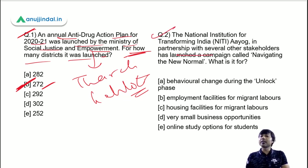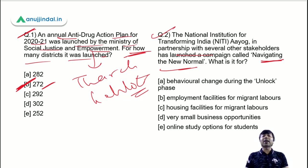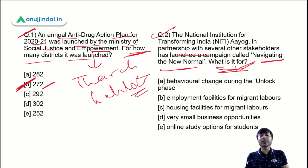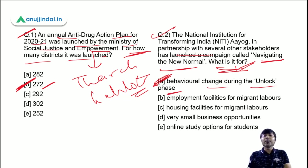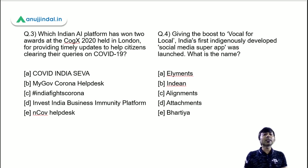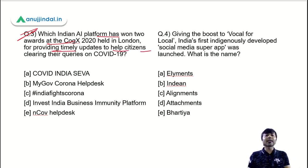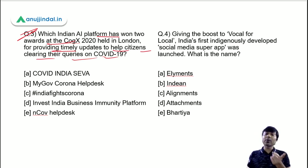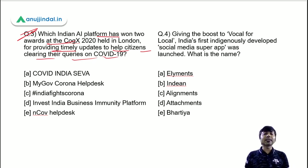Question 2: NITI Aayog in partnership with several other stakeholders launched a campaign called 'Navigating the New Normal'. What is this campaign for? The correct answer is option A — behavioral change during the unlock phase. Question 3: Which Indian AI platform won two awards at the POGX 2020 held in London, for providing timely updates to help citizens clearing their queries on COVID-19? The correct answer is MyGov Corona Helpdesk.